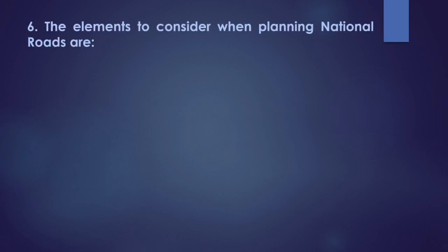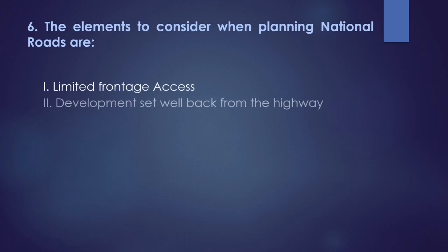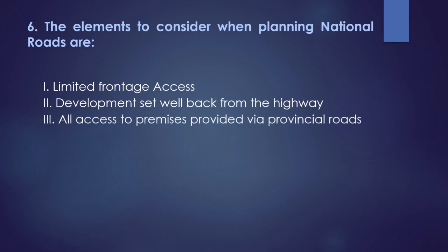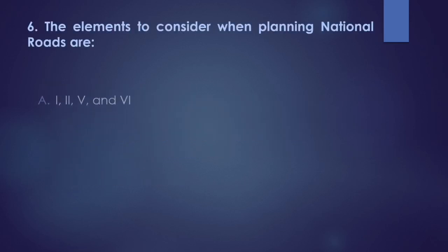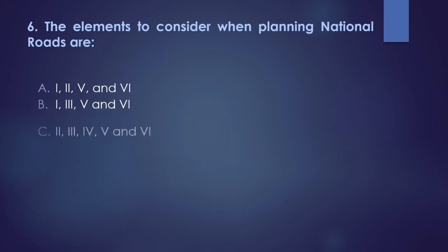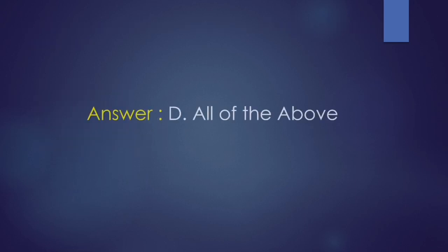Number 6: the elements to consider when planning national roads are: 1. limited frontage access, 2. development set wall back from the highway, 3. all access to premises provided by provincial roads, 4. number of intersections to be minimized, 5. suitable at-grade channel intersection for minor flows and other elements, and 6. no roadside vendors. A. 1, 2, 5 and 6; B. 1, 3, 5 and 6; C. 2, 3, 4, 5 and 6; D. all of the above. The answer here is D. all of the above.